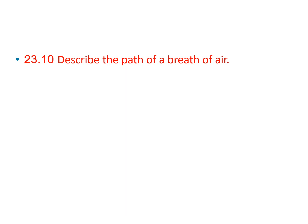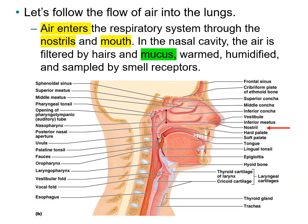The next objective: describe the path of a breath of air. Air enters the respiratory system through the nostrils and the mouth. In the nasal cavity, the air is filtered by hairs and mucus, then warmed, and if it's dry air, humidified. The air is also sampled through smell receptors.